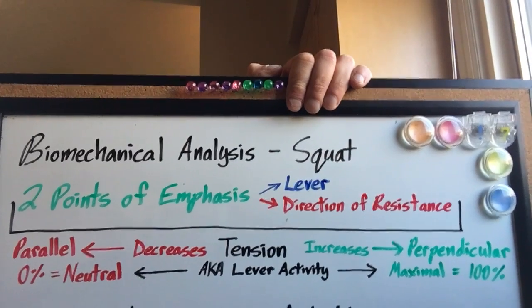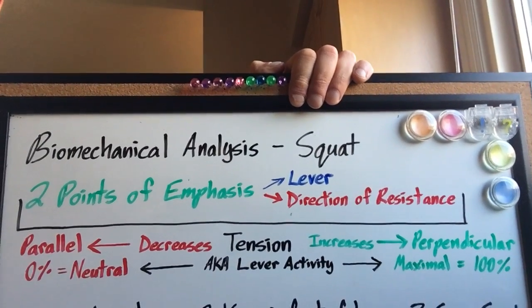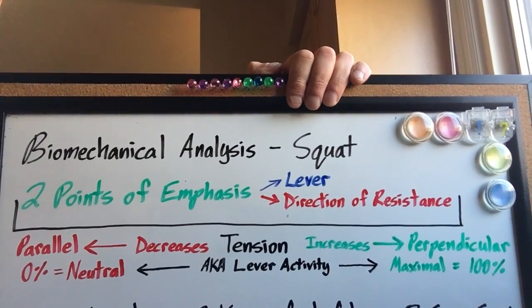Now, the closer that these two points of emphasis get to parallel of one another, the more neutral the position is. Because the closer they get to perpendicular of one another, the more active the lever is going to be.